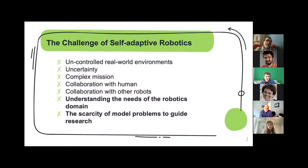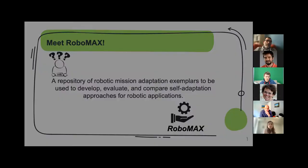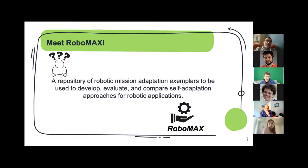Self-adaptability requires a clear understanding of self-adaptation requirements. The problem is the lack of models that practitioners and system designers can refer to for a comprehensive understanding of those requirements. To address this, we propose RoboMax — a repository of robotic mission adaptation exemplars collected from the robotic community, both academia and industry, which can be used to develop, evaluate, and compare self-adaptation approaches for robotic applications.